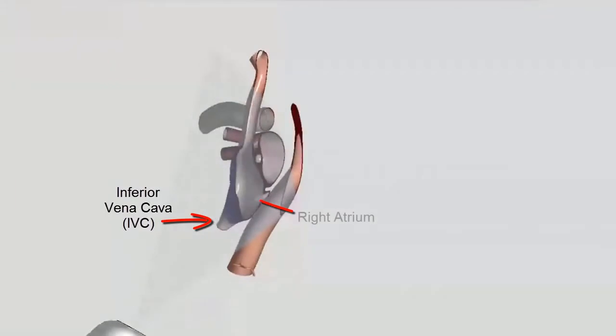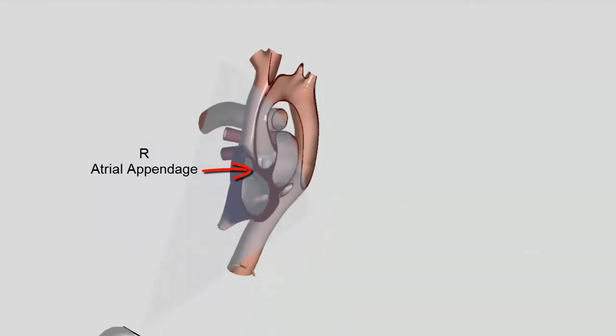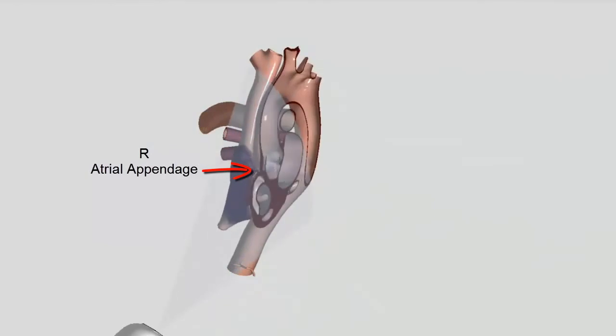We're going to move back a little into the inferior vena cava. This is the inside of the right atrium, and this is the right atrial appendage here. This is mostly known for poor blood flow and causing clots and infection.